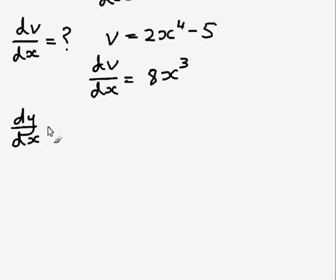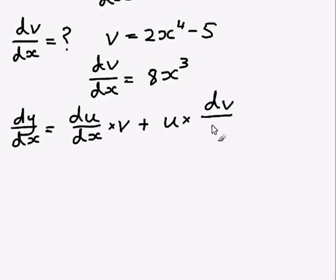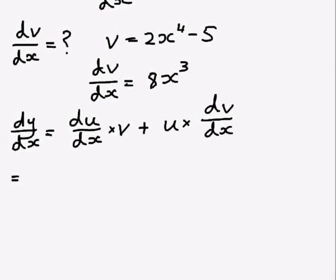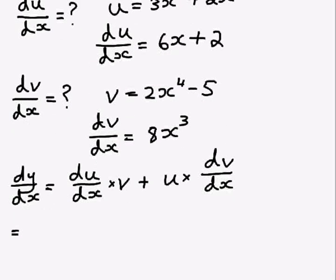So now we can go back to our original product rule which is that dy dx equals du dx times v plus u times dv dx. Now we know all 4 bits of this so we can just substitute things in. Now notice I'm leaving lots of space because this can get quite long.